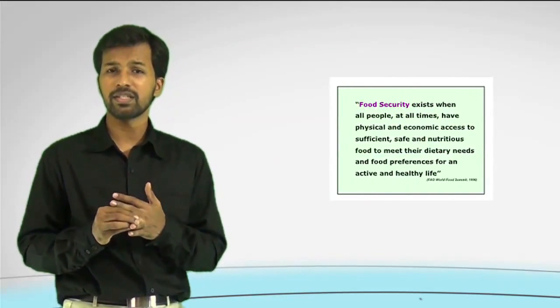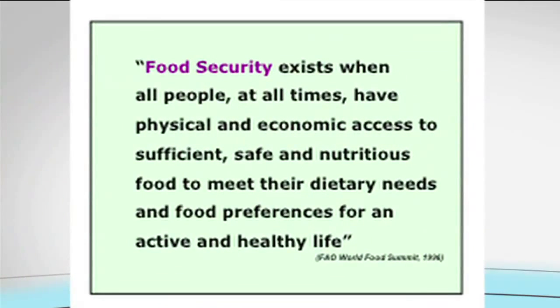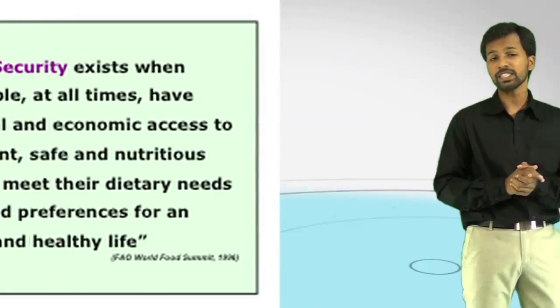According to the FAO World Food Summit held in Rome in 1996, food security exists when all people at all times have physical and economic access to sufficient and nutritious food for their dietary needs and food preferences for an active and healthy life. Now food security depends on three pillars — or rather, it stands on three pillars. One is availability, the second is access, and the third is utilization or use.